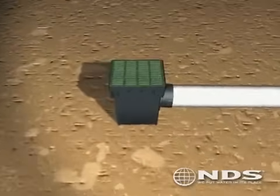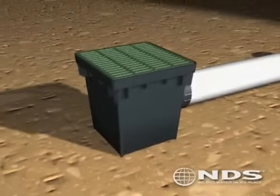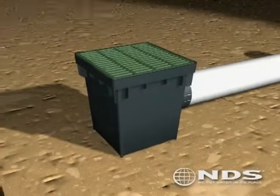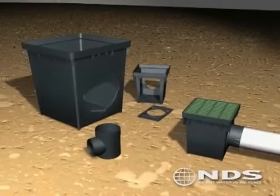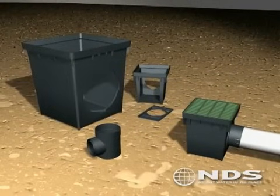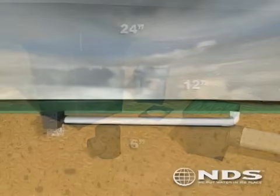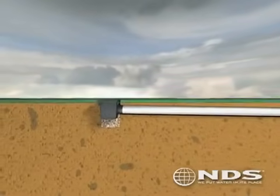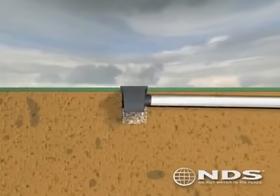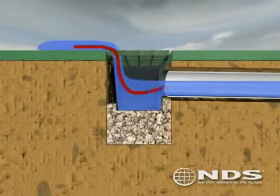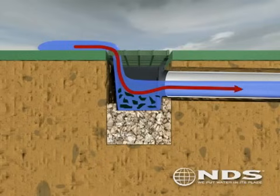The most widely used component of the collection phase is a plastic catch basin. Plastic catch basins come in different sizes and shapes, from a six-inch round speedy basin to a 24-inch square catch basin. Catch basins have a sump area beneath the pipe connection that catches any leaves or debris before they enter the drainage pipe and potentially clog the system.